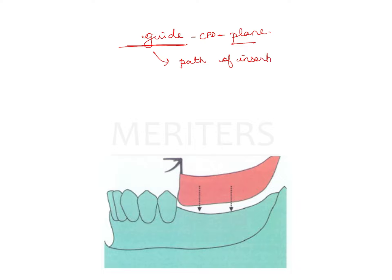This flat surface prepared on the premolar is going to allow the denture to fit in a suitable way. Because there are teeth present in the mouth for a partial denture wearer, the denture will not directly go in like a complete denture — you have to tilt the denture a little and wear it.